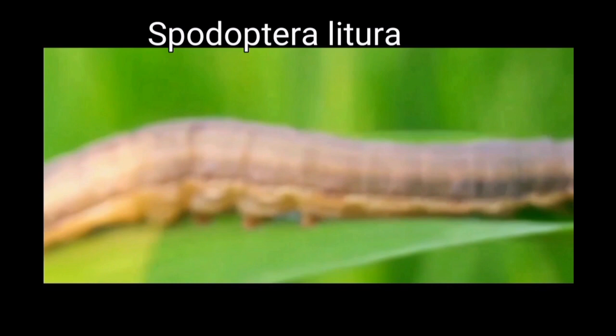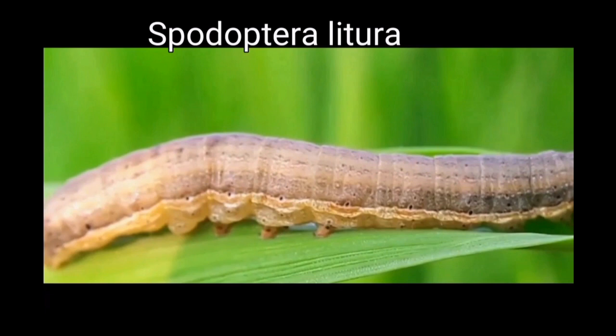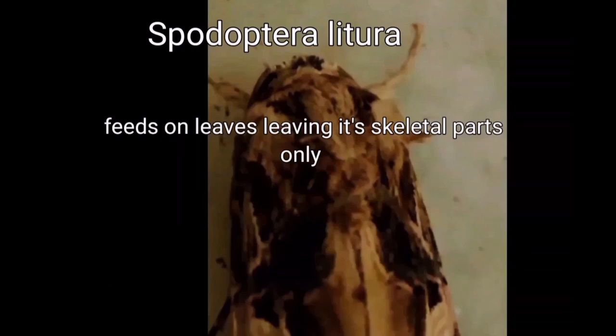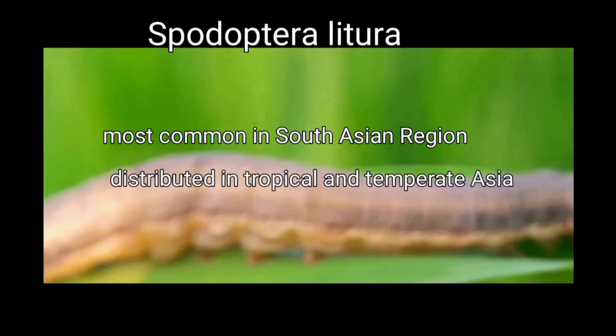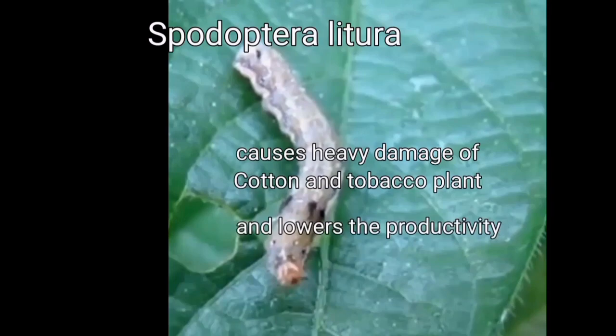Some characteristic features of Spodoptera litura: it feeds on leaves, leaving only the skeletal parts, and parasitizes the plant through a vigorous larval eating pattern. Spodoptera litura is most common in the South Asian region, distributed in tropical and temperate Asia. It causes heavy damage to cotton and tobacco plants, lowering their production. The damage is caused by the worm-like young larva.